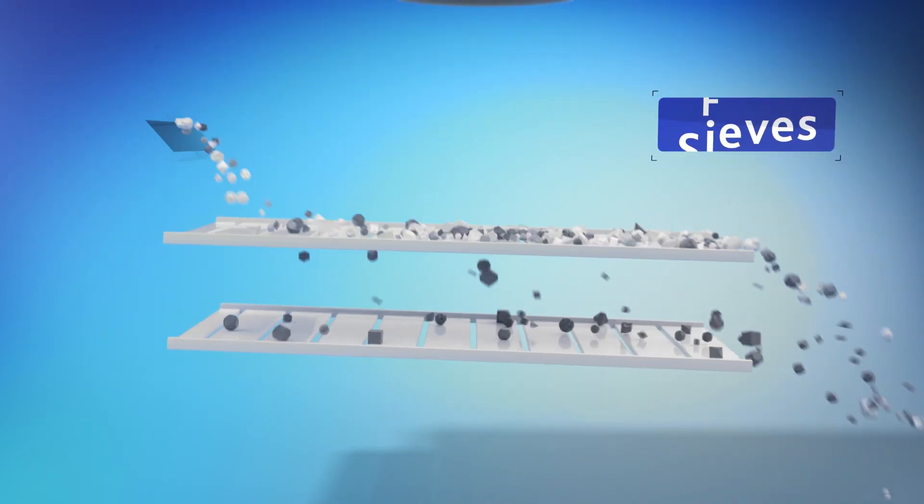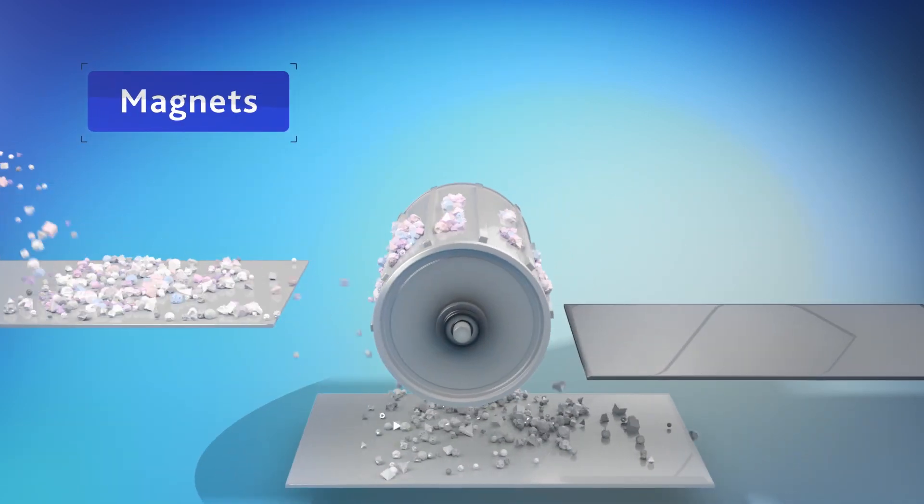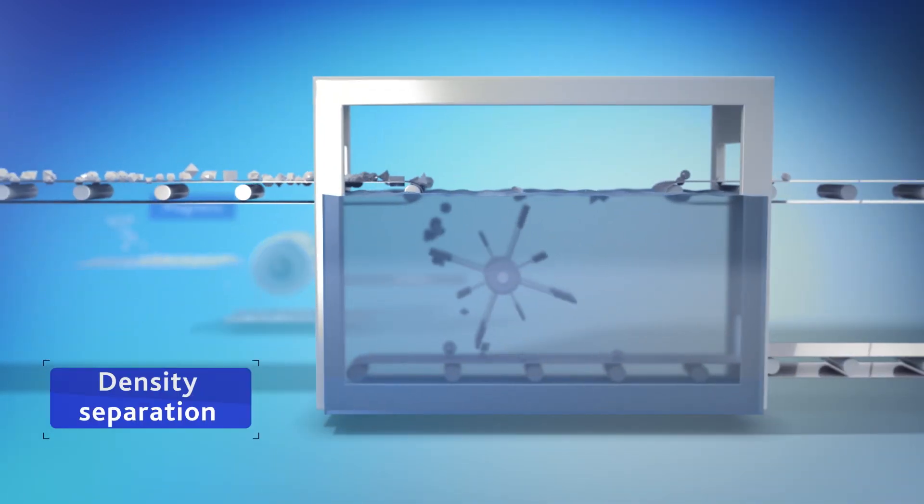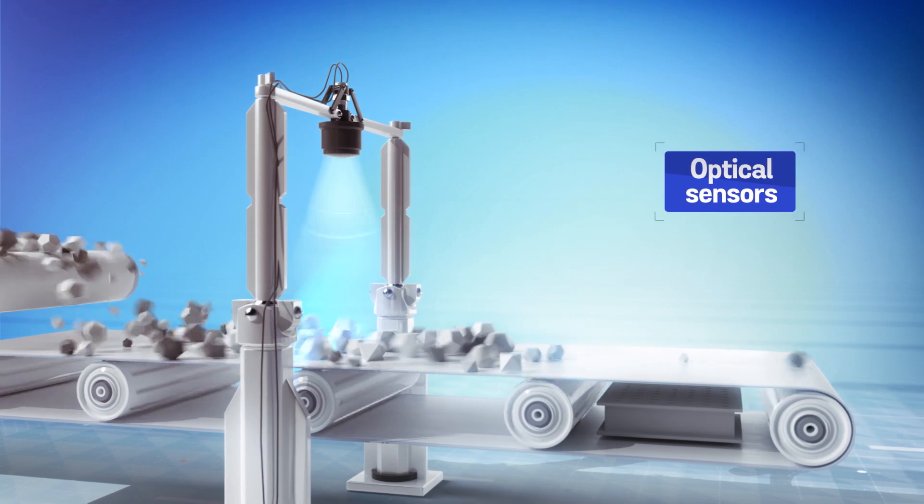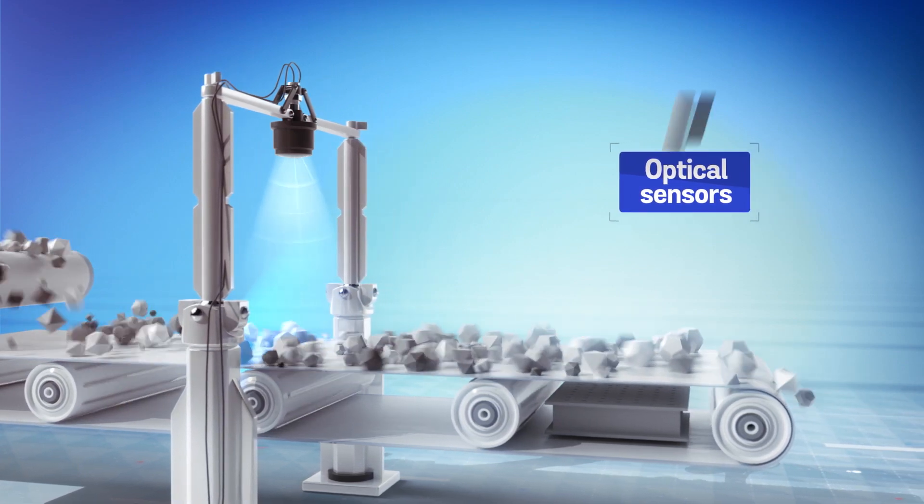With large sieves, fans, magnets and density separation, light fractions are separated from heavy ones and plastics from metals. New, modern technologies such as optical sensors help the sorting of certain metals.